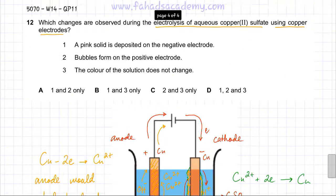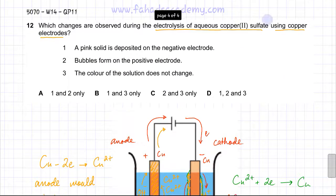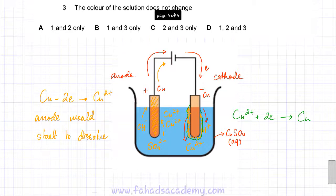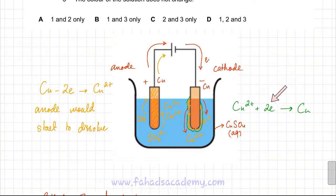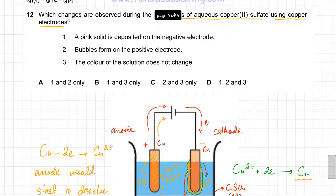Now we evaluate the three statements. The first statement says a pink solid is deposited on the negative electrode. The negative electrode is the cathode, where Cu²⁺ ions gain electrons to form copper metal. Pure copper metal has a pinkish color. Therefore, the first statement is correct.